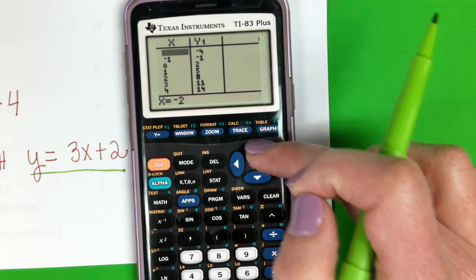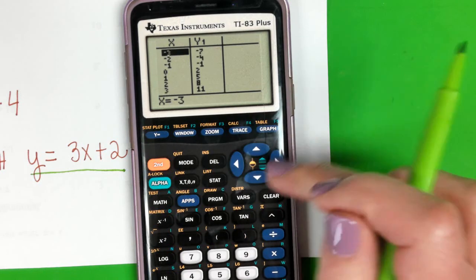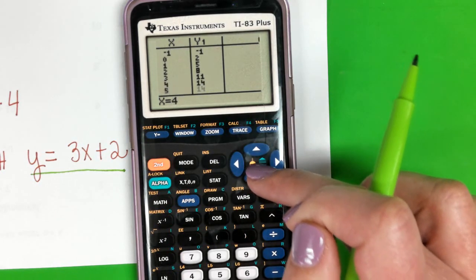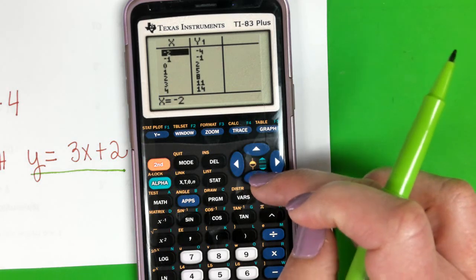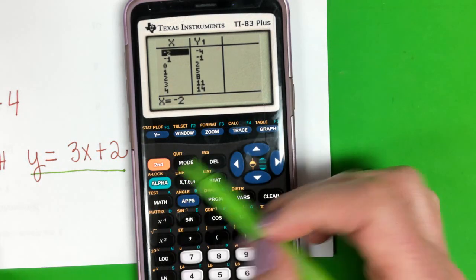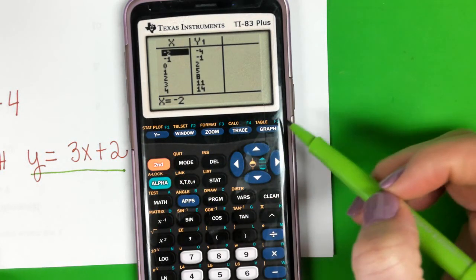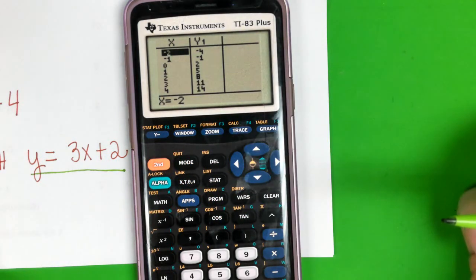And so this can be really helpful on the Star test to pull up the table and use these numbers to match up with your answer choices. Okay, because all of these points are on that line, it can help you with solving and making sure your equations are correct. Again, second graph pulls up the table.